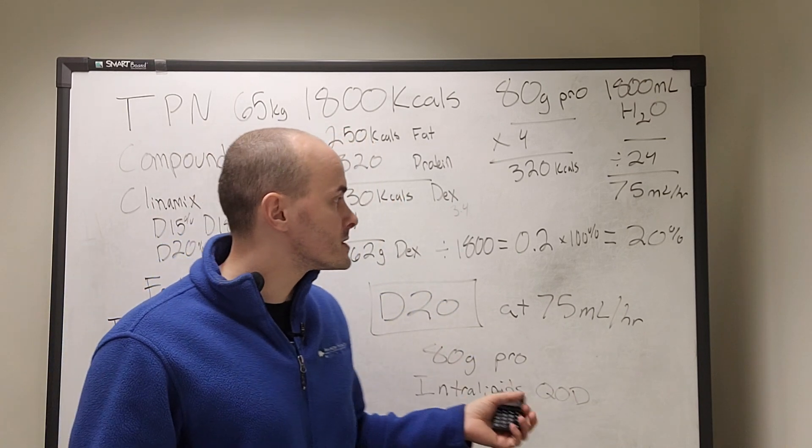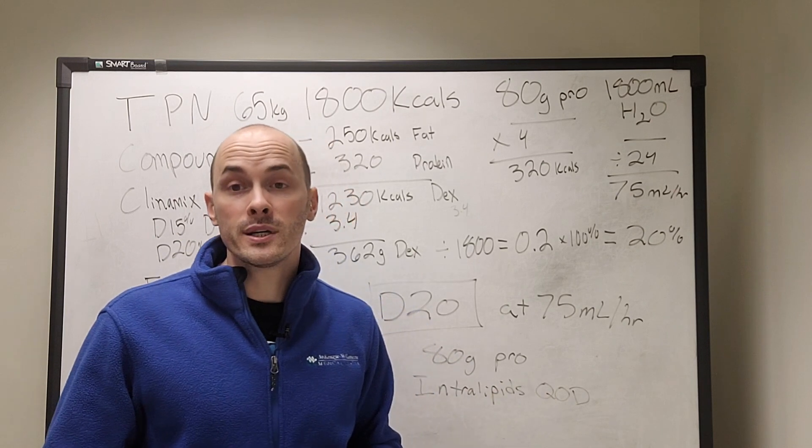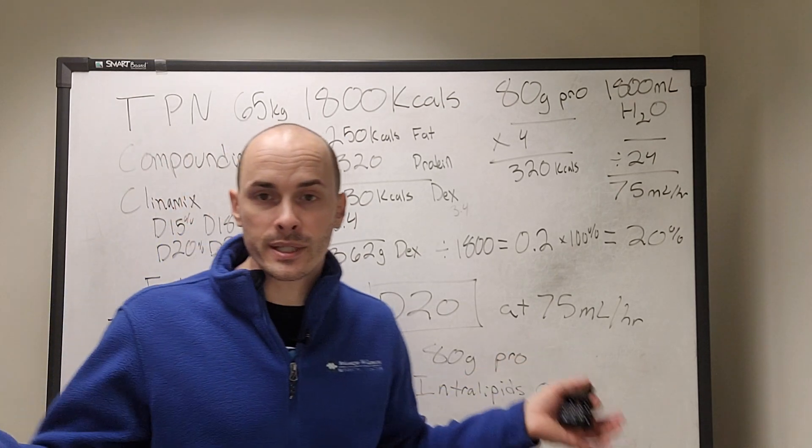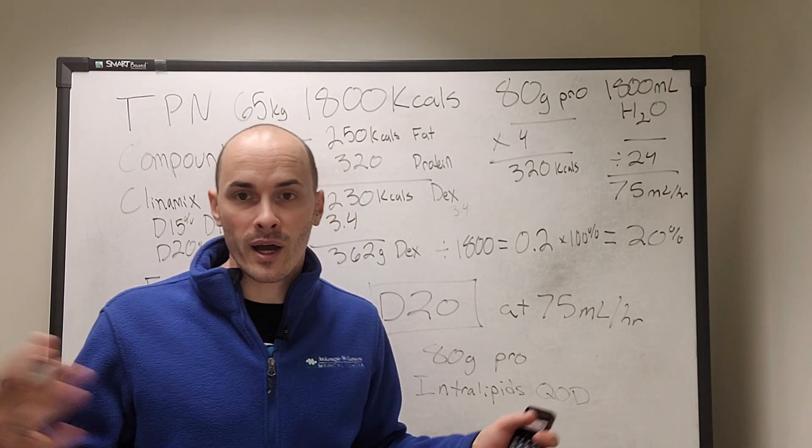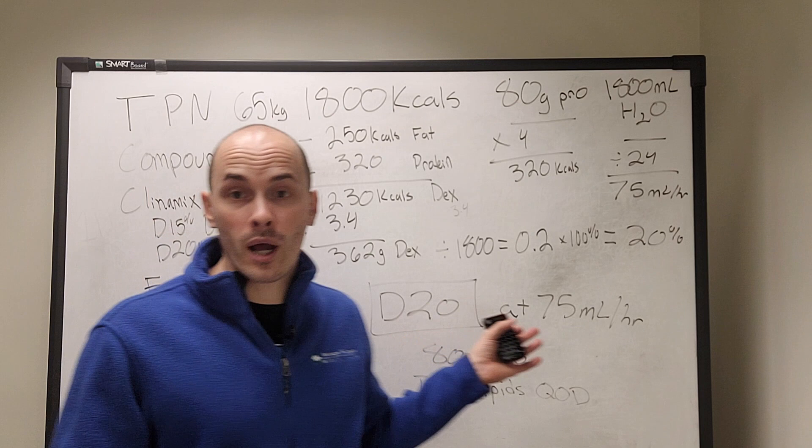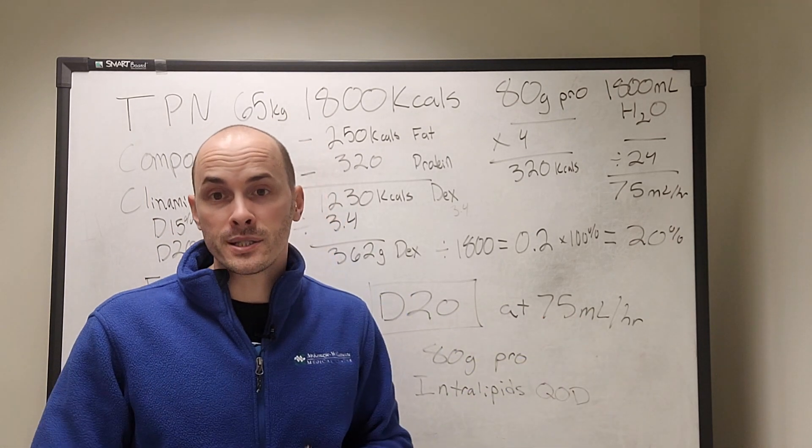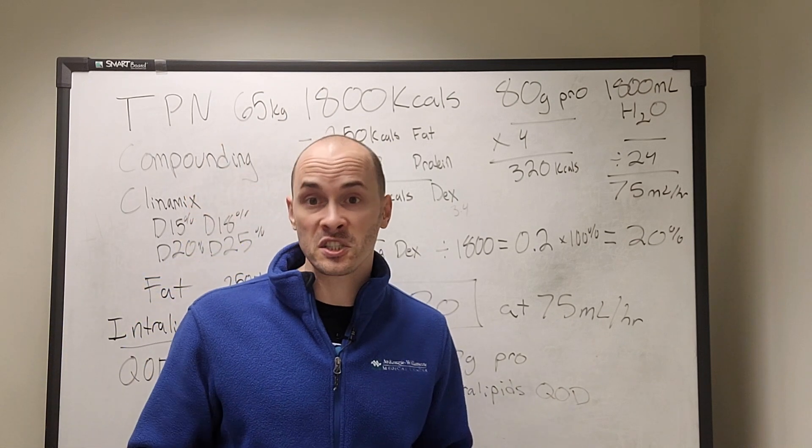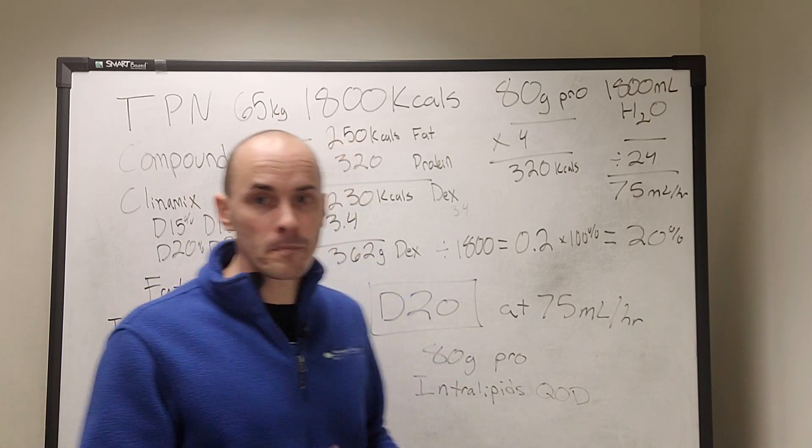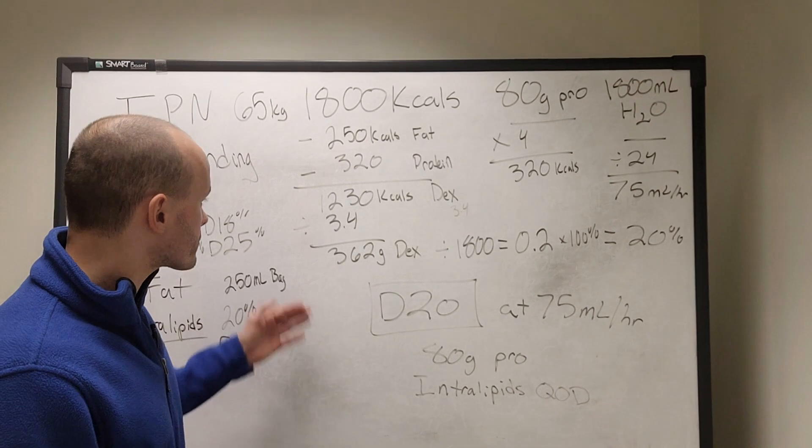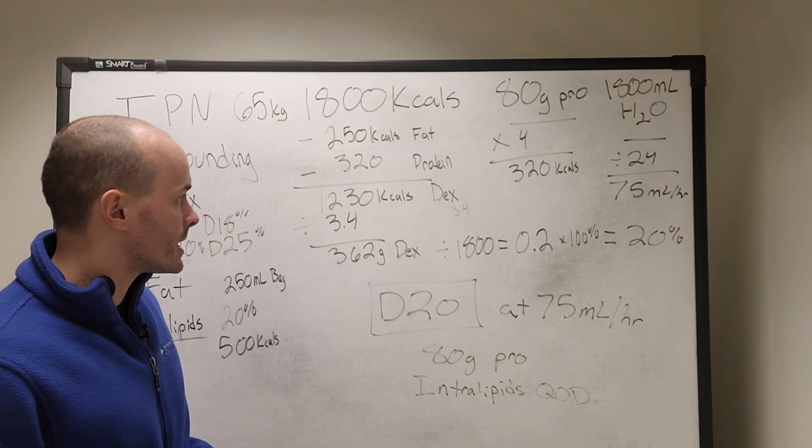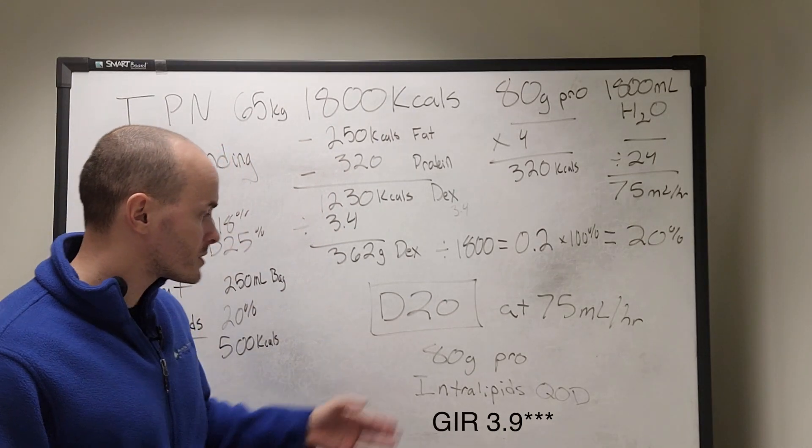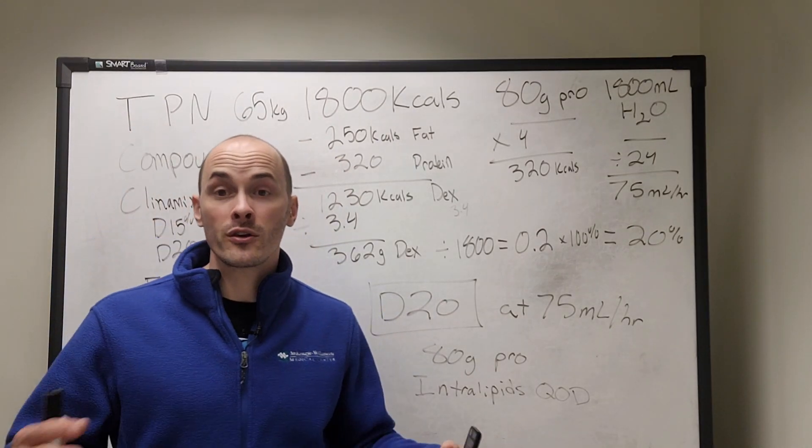So this worked out where it gives us D20, but if it comes out to D17 or D21, what you can do is you can do the math. Let's say it's D17 at 75 an hour or something. You can round up to D20, do the math and figure out, okay, how many extra calories is this person going to get? Is that acceptable? And do the math that way. But here, they're going to be getting a D20 solution, 75 mils an hour, 80 grams of protein, and intralipids every other day.